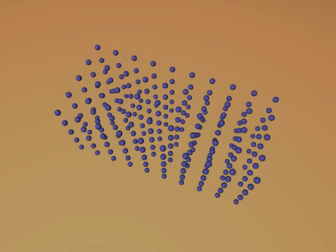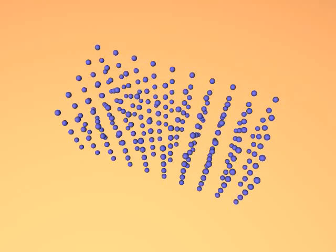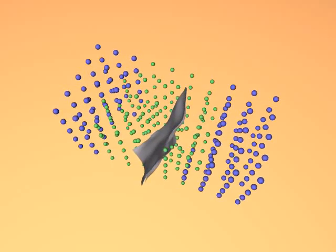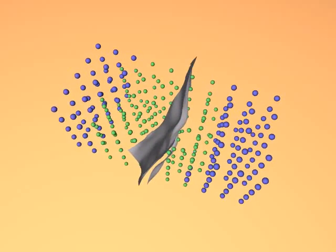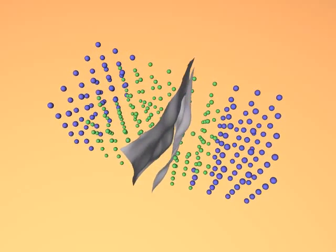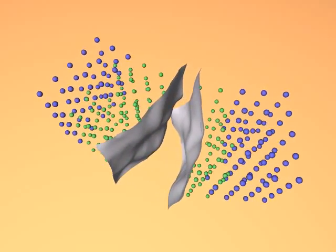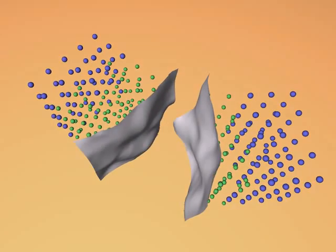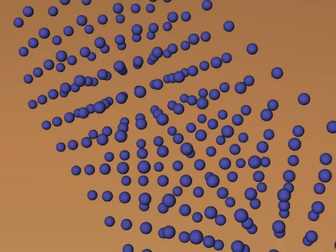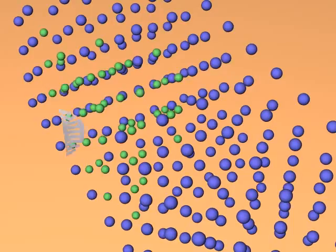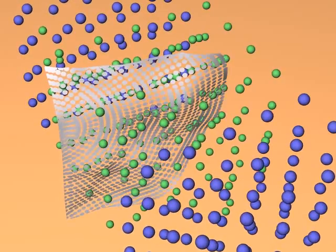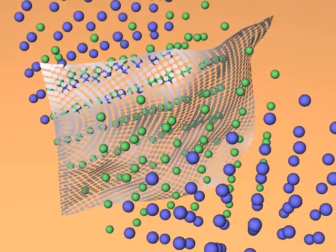As the crack propagates through the solid, the simulation nodes are resampled to maintain the accuracy and stability required for the physical simulation. While advancing the crack front, the fracture surface is easily constructed by inserting new surfels.